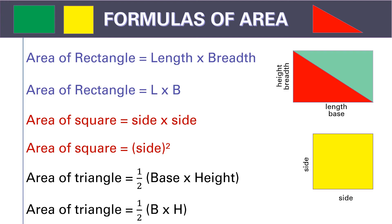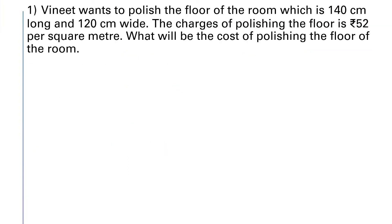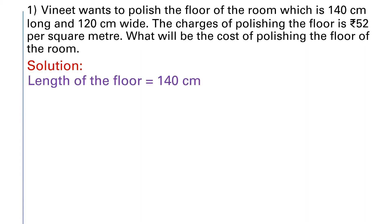Let's try using these formulas with a few examples. Number 1: Vinit wants to polish the floor of a room which is 140 cm long and 120 cm wide. The charges of polishing the floor is Rs. 52 per square meter. What will be the cost of polishing the floor of the room? We have to find the area, because we are polishing the entire area covered by the floor — not just the boundary. The charge is given per square meter, which is the unit of area, so we need to find the area.